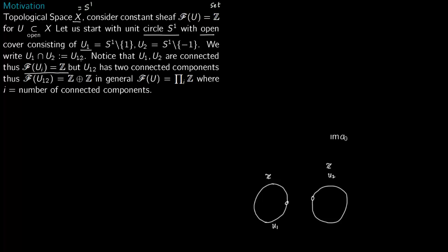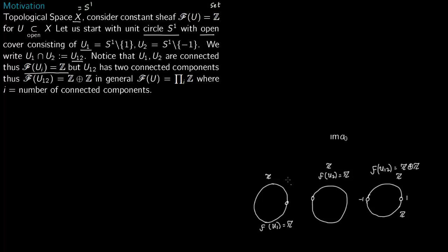Now we write the intersection as U12. The intersection of these two sets gives us something with two points missing: −1 is missing here and 1 is missing here. So U12 = U1 ∩ U2 has two connected components. The first component gets mapped to integers and the second also to integers, so F of U12 is ℤ×ℤ. In general, F of U is ℤ^I where I is the number of connected components.